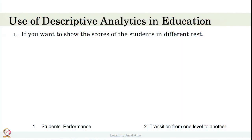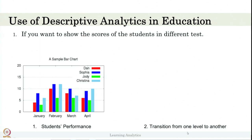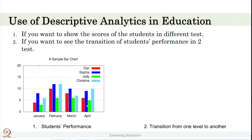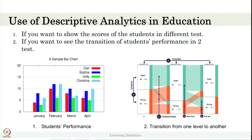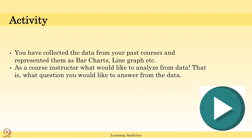If you want to show scores of students across different tests, use descriptive analytics. For example, with 4 students taking tests in January, February, March, and April, you can show a simple bar graph to compare scores across months. Or if you want to see the transition of student performance between two tests — say an entry test and an exit test — you can represent that transition using stratified diagrams. This diagram is created using a tool called ISAT, which we will discuss in the third or fourth week of our lecture.